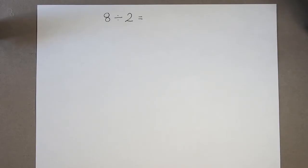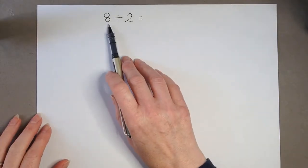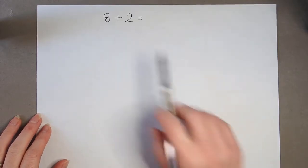We're going to look at division now as grouping. So here I've got the calculation 8 divided by 2.